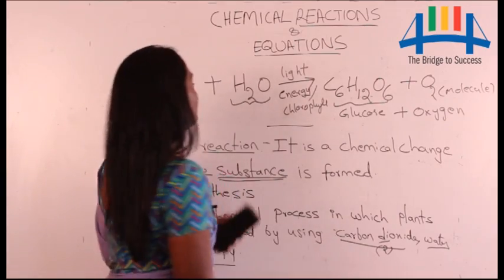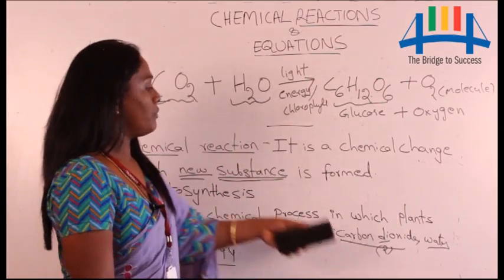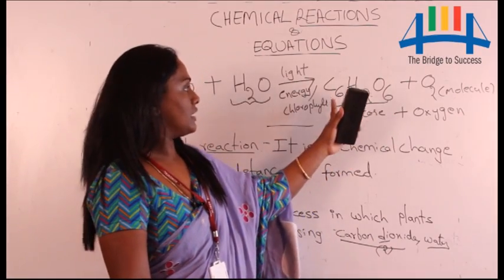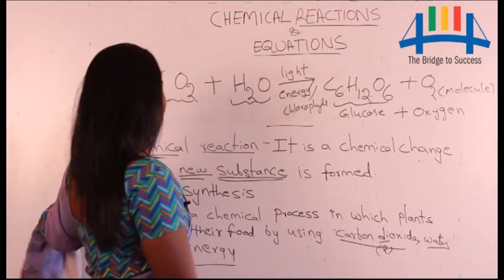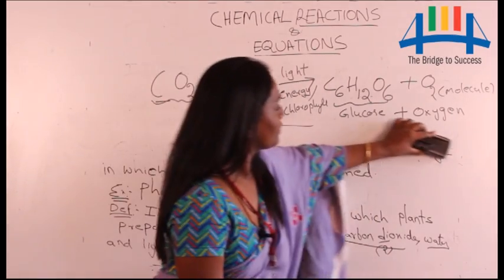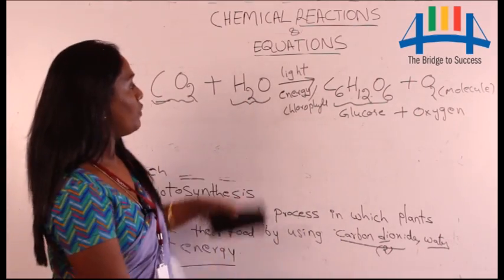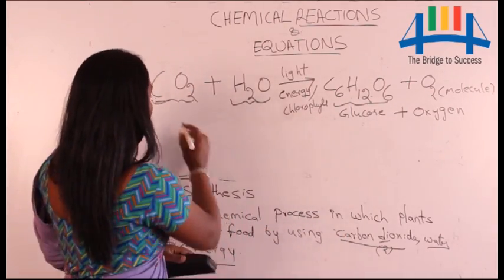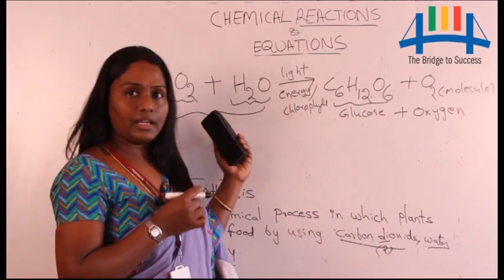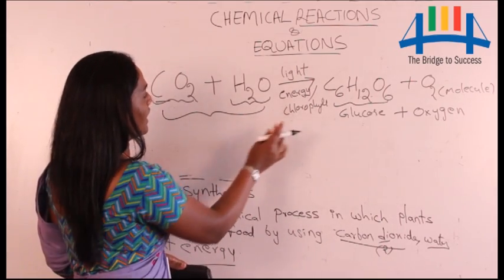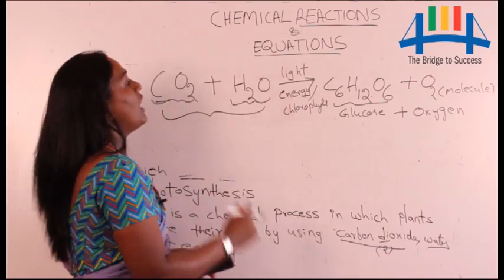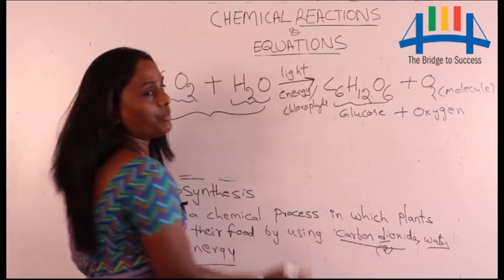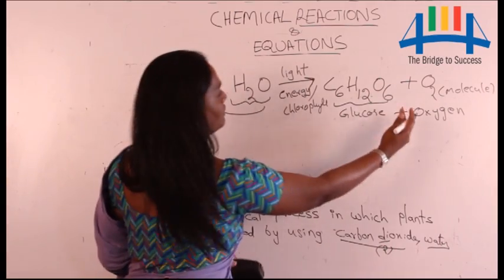So instead of writing all this in words, we can write in short form using the formulas of these substances: carbon dioxide, water, light energy, chlorophyll on one side, and C₆H₁₂O₆ and O₂ on the other. Now, to separate the two sides of the reaction, we have kept an arrow mark.